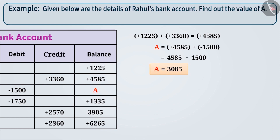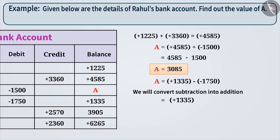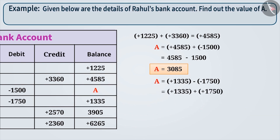We can also find this result by the subtraction operation. We can find the previous balance by subtracting the amount debited, minus 1,750, from the next balance, plus 1,335. In order to solve this, convert subtraction into addition. Keep the first integer as it is, then replace the minus sign with a plus sign and take the additive inverse of the second integer, which is plus 1,750. Here, both the signs are the same. Therefore, we add both the numbers ignoring the sign, and the result will be 3,085. Now, add the common sign, plus, to the result. This is the value of A.